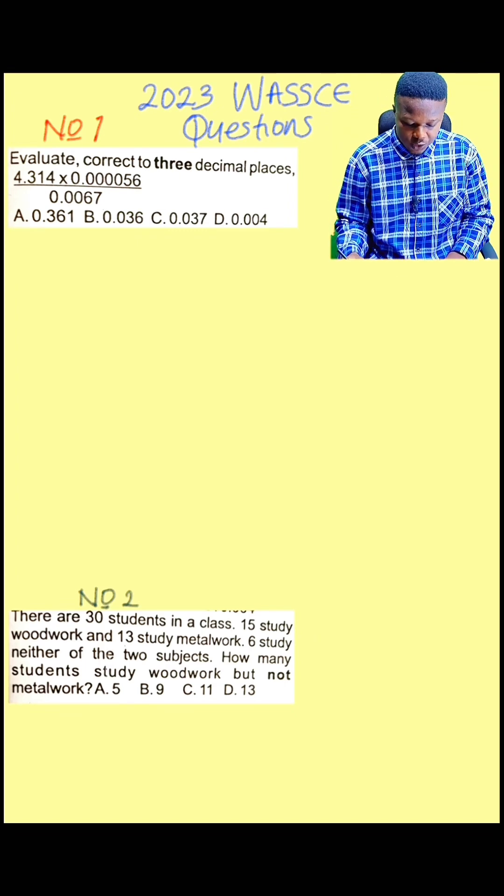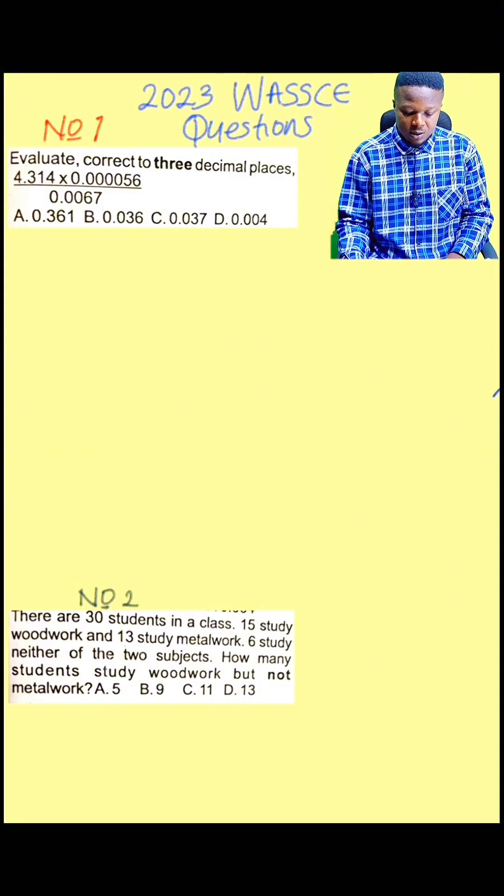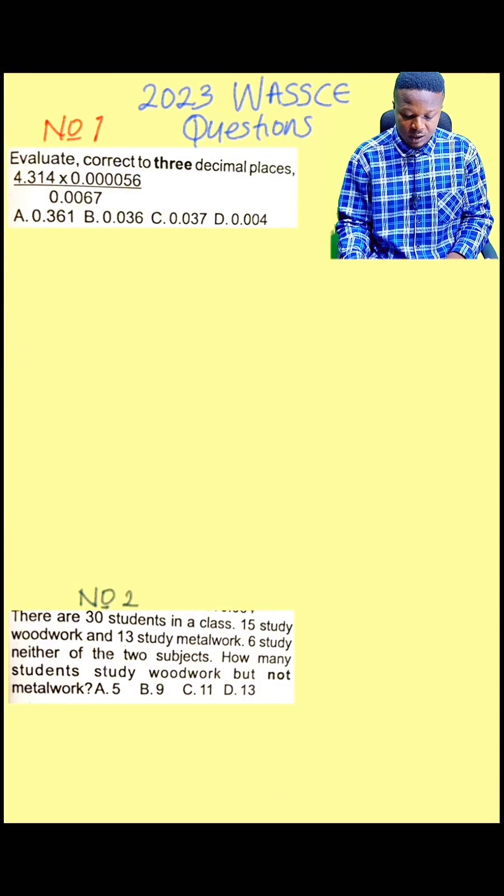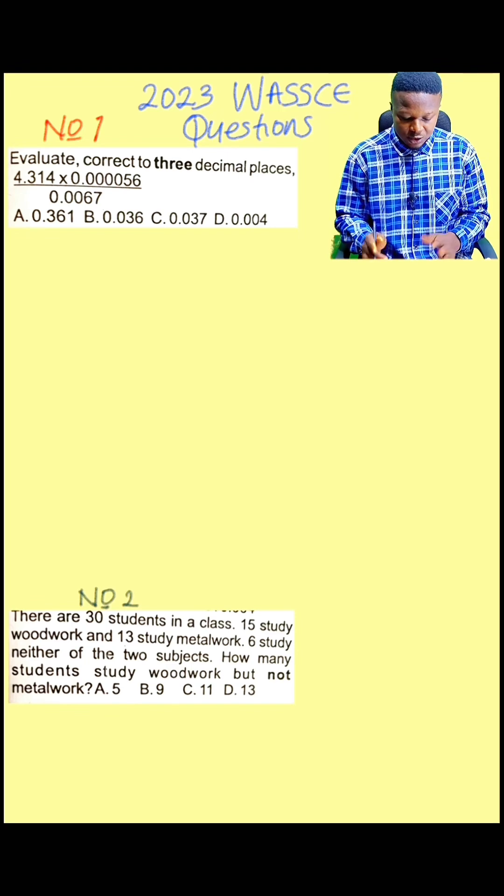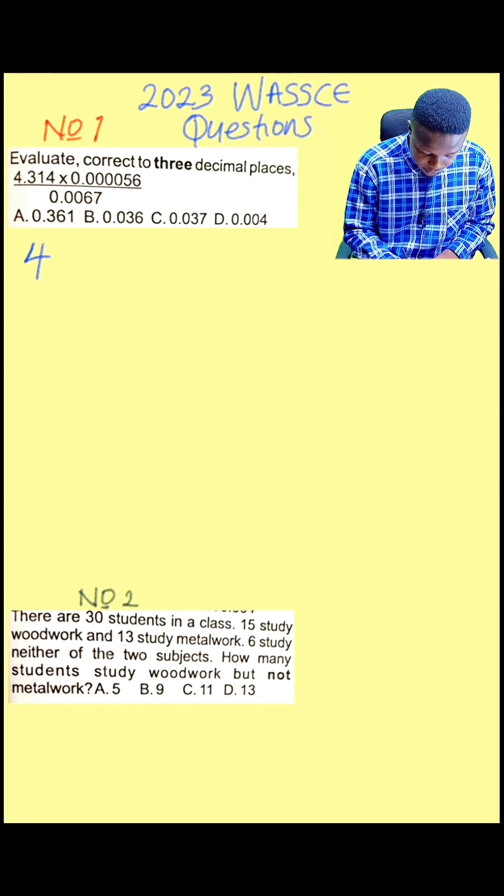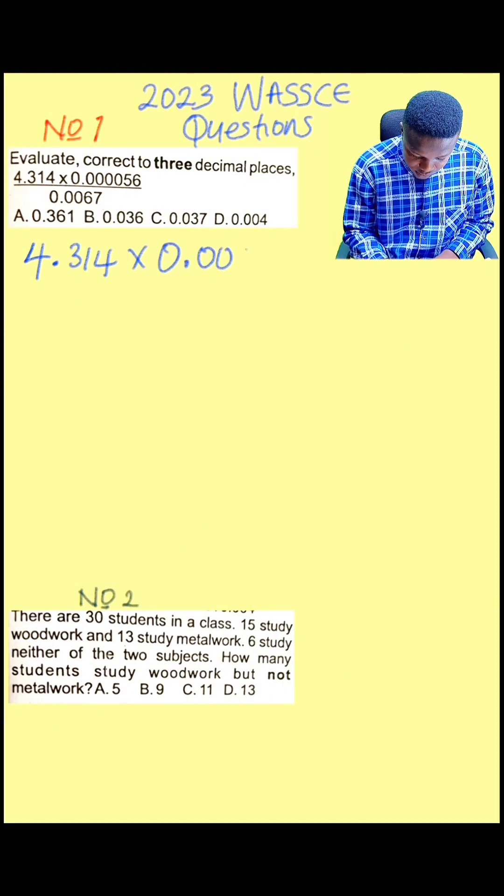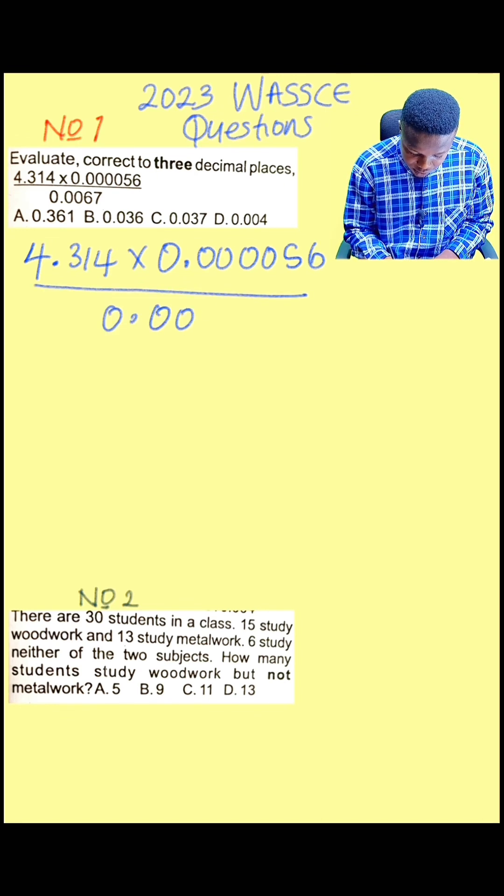It's saying that we should evaluate 4.314 multiplied by 0.00056 over 0.0067 and we leave our answer to three decimal places. To do this, you calculate 4.314 times 0.00056 divided by 0.0067.